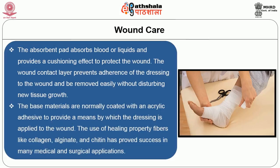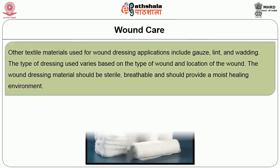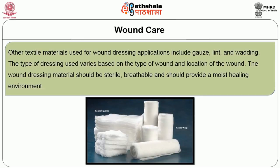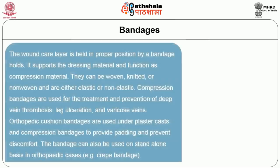The base materials are normally coated with an acrylic adhesive to provide a means by which the dressing is applied to the wound. The use of healing property fibers like collagen, alginate, and chitin has proved success in medical and surgical applications. Other textile materials used for wound dressing include gauze, lint, and wrapping. The types of dressing used vary based upon the type and location of the wound. The wound dressing material should be sterile, breathable, and should provide a moist healing environment.